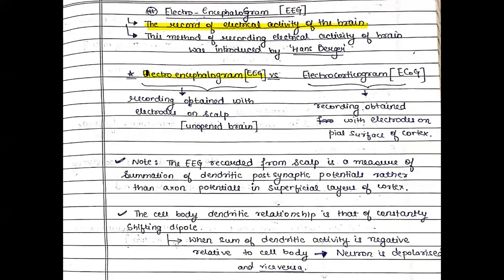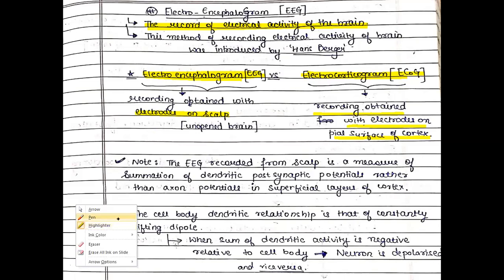Electrical activity of the brain can be measured in two ways: one is EEG which is electroencephalogram, and another one is the electrocorticogram. In electroencephalogram, we record by placing the electrodes over the scalp. If we place the electrodes on the pile surface of the cortex or in direct contact with the cerebral cortex, then we call it electrocorticogram. But normally it is not feasible to perform this, so EEG is preferred.